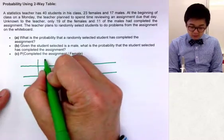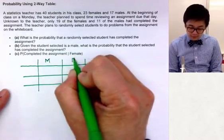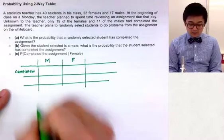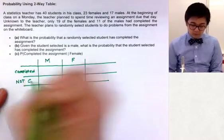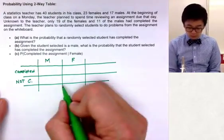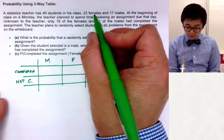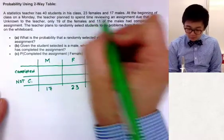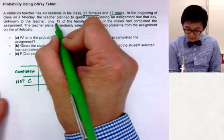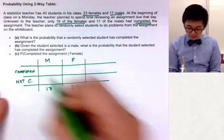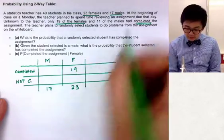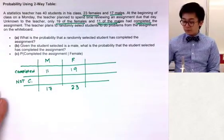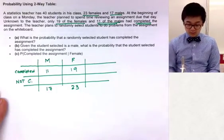The table will show male students, female students, students who have completed the assignment, and students who have not completed it. From the problem, we know there are 23 females and 17 males, and that 19 females had completed the assignment. These are the only values given, but we can complete the table by simple arithmetic.